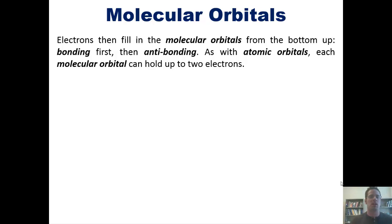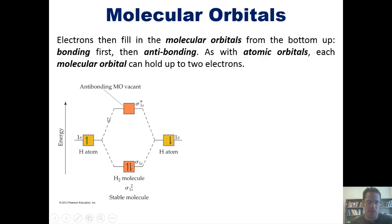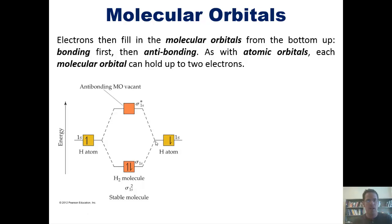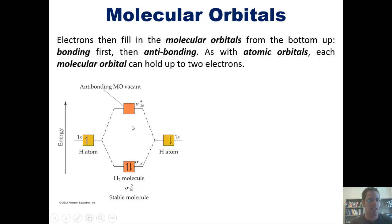Each molecular orbital can hold up to two electrons. In this diagram, on the left and right we have individual hydrogen atoms and their individual 1s atomic orbitals. Each hydrogen atom brings one electron to the table. Once they overlap their two atomic orbitals, they form two new orbitals: a bonding orbital represented by the lower box and an anti-bonding orbital above it. Since each hydrogen atom brought one electron, the final H2 molecule has two total electrons, which fill the bonding orbital. The anti-bonding orbital remains empty.